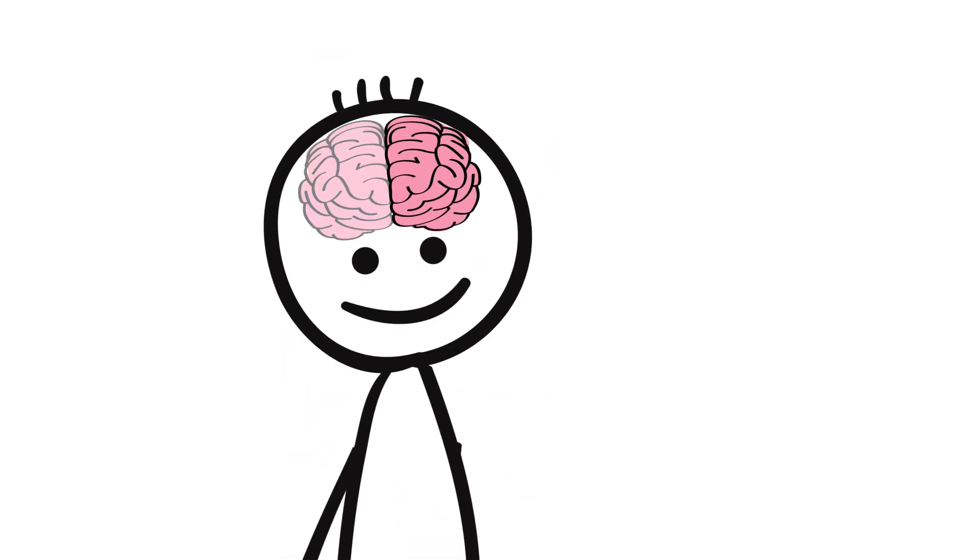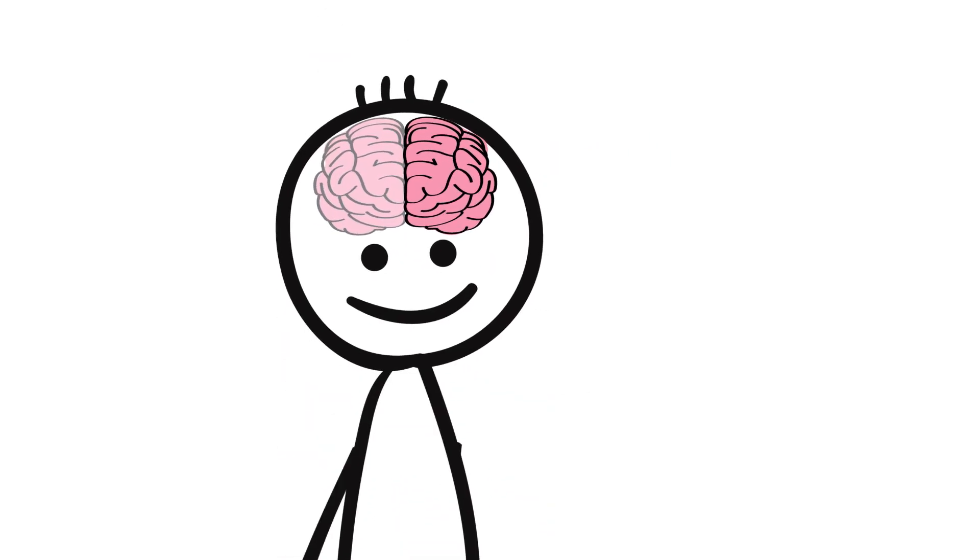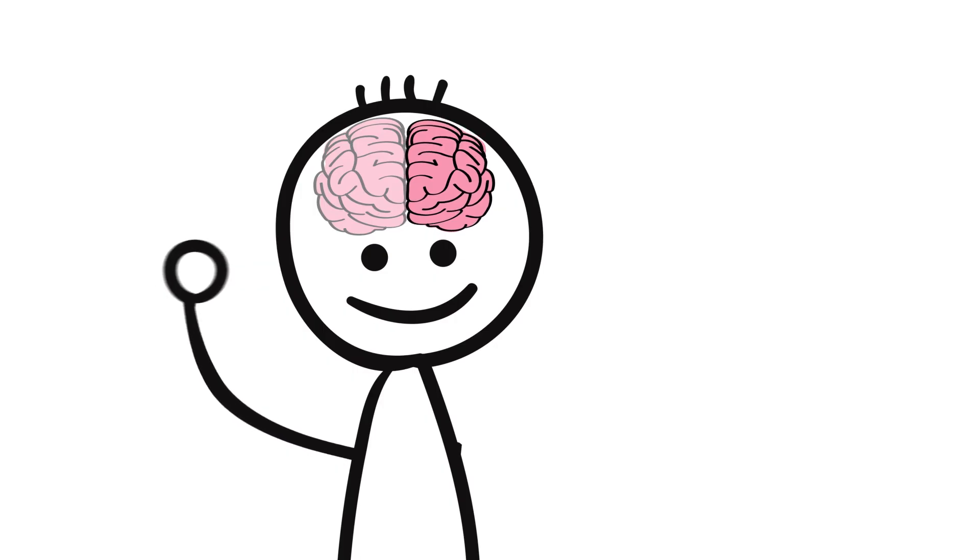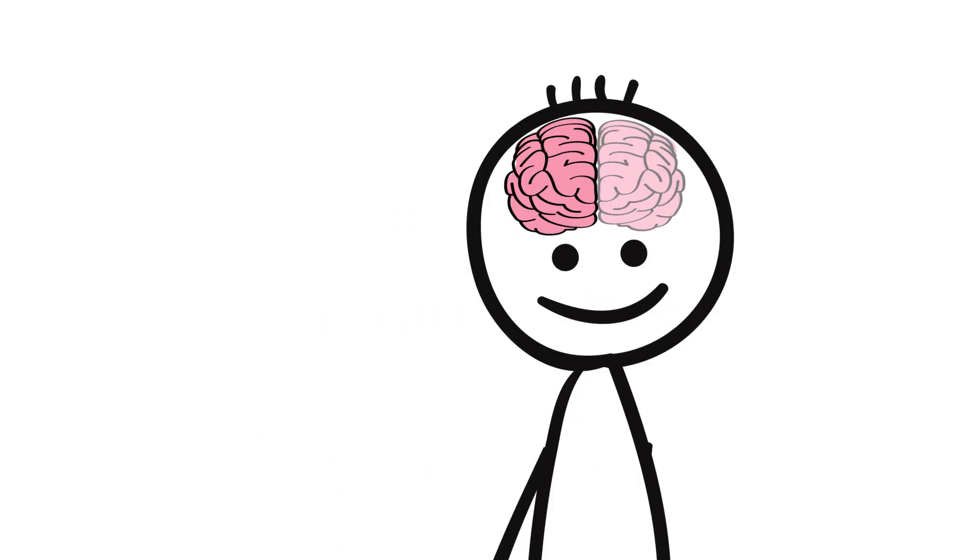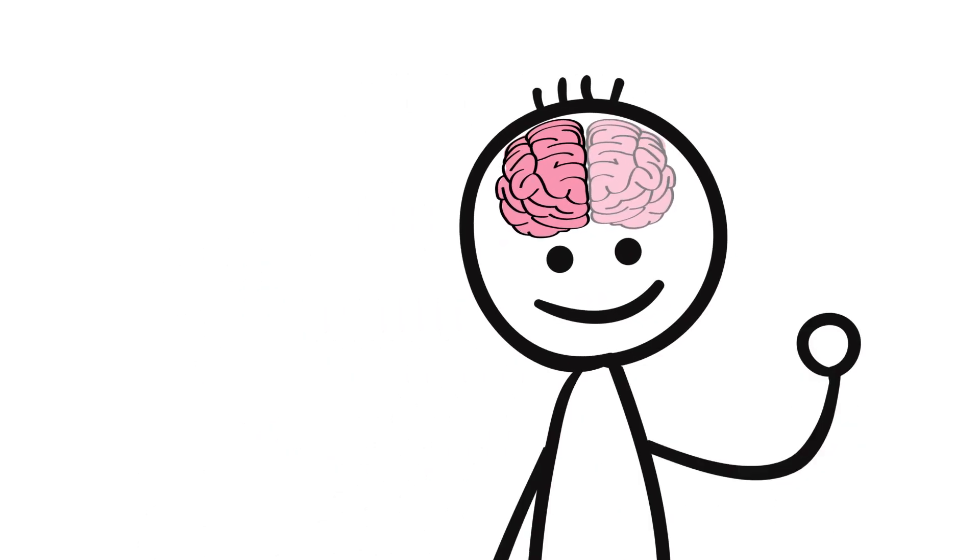The left side of the brain controls actions on the right side of the body. So if you wave your right hand, that's the left side in action. The right side of your brain controls the left side of your body.